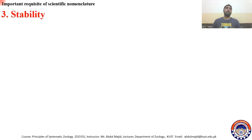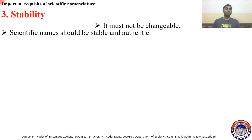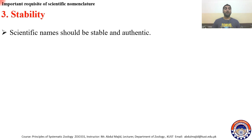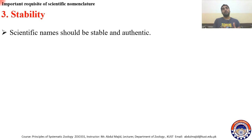The third important requisite of scientific nomenclature is stability. Scientific names should be stable and authentic. Names which are not stable and not authentic must not be used, because the name of a taxon is a key to the whole literature. If the name is not stable or authentic, it will cause difficulties for scientists studying a specific taxon and would be like a havoc for the whole nomenclature system.